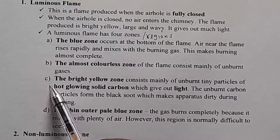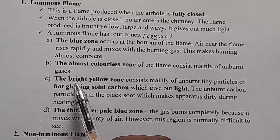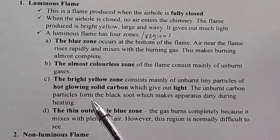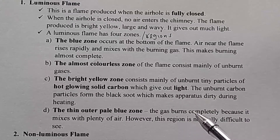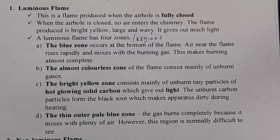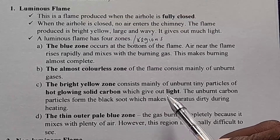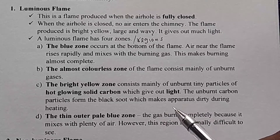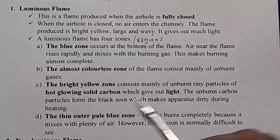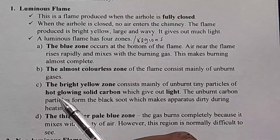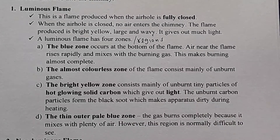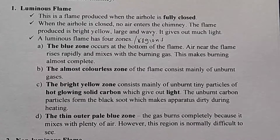Coming back to region C, the bright yellow zone — it consists mainly of tiny particles of hot glowing solid carbon which give out light. So during the exam, if you are told: explain why luminous flame produces much light, the answer is: this is due to the tiny particles of hot glowing solid carbon which give out much light.